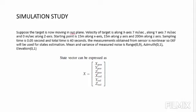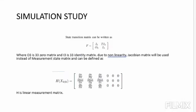The state vector can be expressed as x position, y position, z position, x velocity, y velocity, and z velocity — so x will be a 6×1 matrix. The state transition matrix can be written as F = [I₃, T·I₃; O₃, I₃], where O₃ is a 3×3 zero matrix and I₃ is a 3×3 identity matrix. Due to nonlinearity, the Jacobian matrix will be used instead of the measurement state matrix.